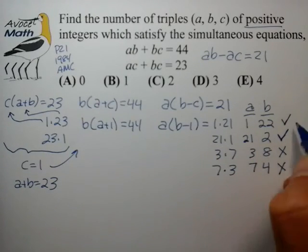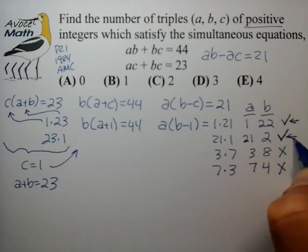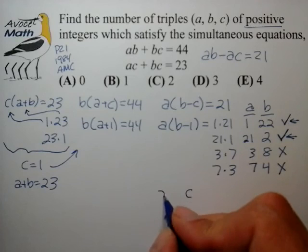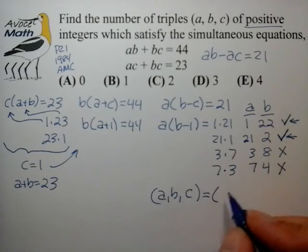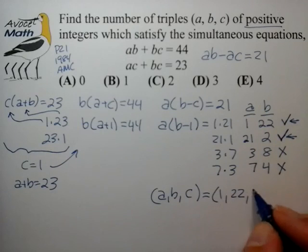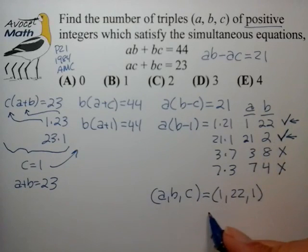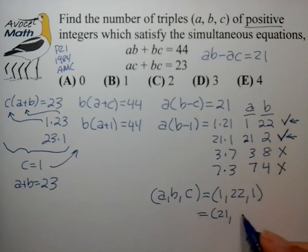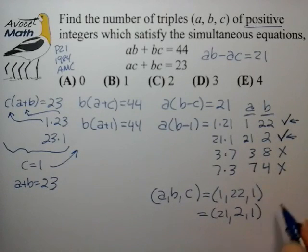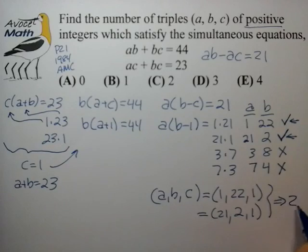So we find that the only possible solutions that are consistent with all three equations are (a, b, c) equals (1, 22, 1), and then the second solution is a equals 21, b equals 2, and c equals 1. So that's two solutions in total, and that's choice C, 2.